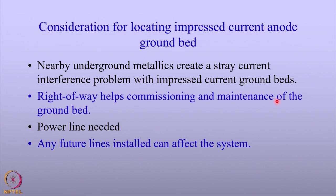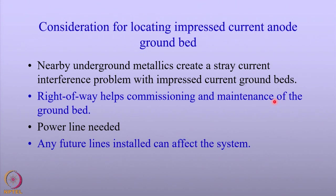Because sacrificial anode systems do not need any current, we do not worry about power lines. In contrast, impressed current anode systems require power lines, so that is a very important part of locating the anode ground bed. One should also consider what would happen if there are any future lines installed in nearby systems, because there can be electrical interferences which can cause stray current corrosion problems.